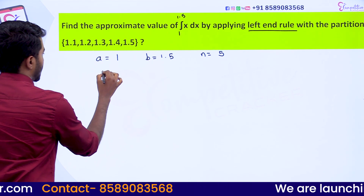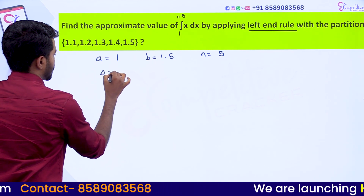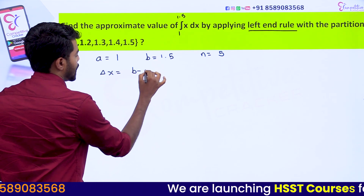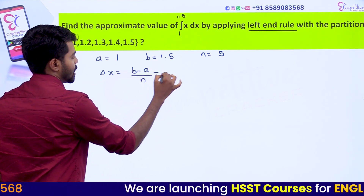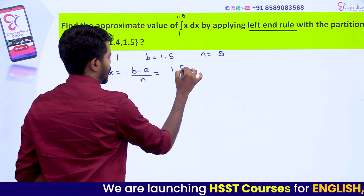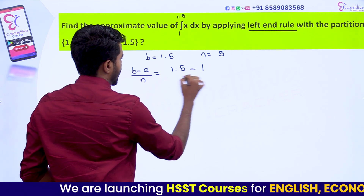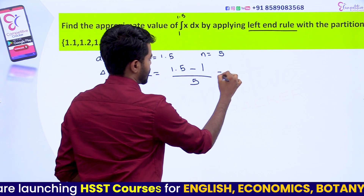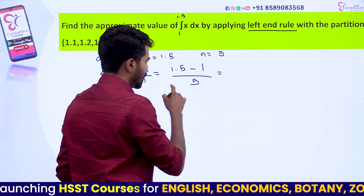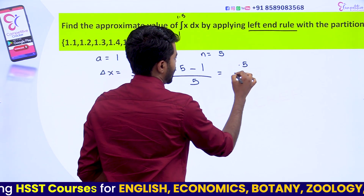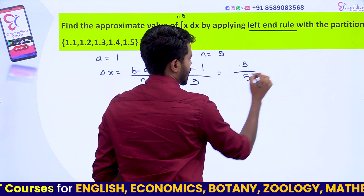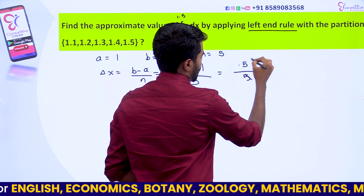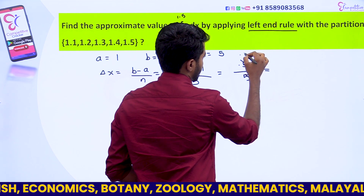Let's take the value of delta x. That is equal to b minus a divided by n, which equals 1.5 minus 1 divided by 5. Value of n is equal to 5. That gives 0.5 divided by 5, which equals 0.1.